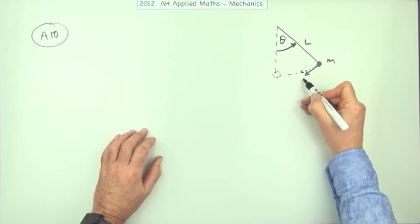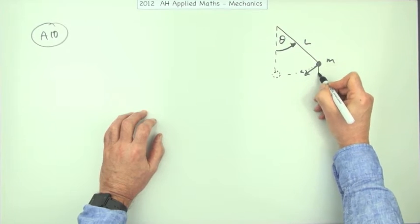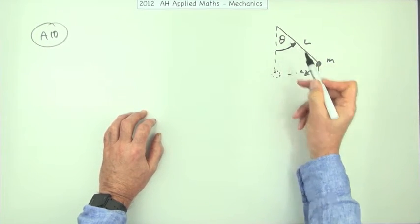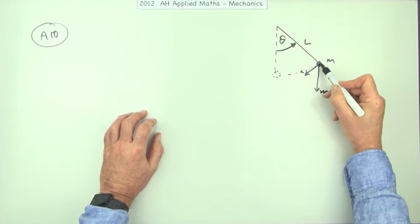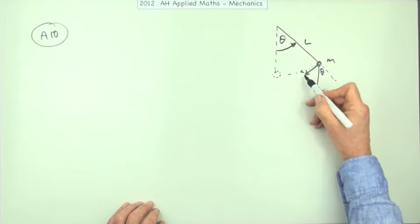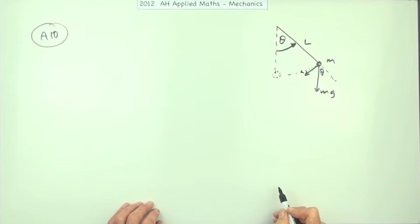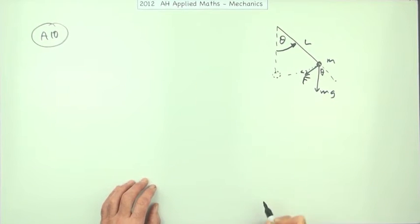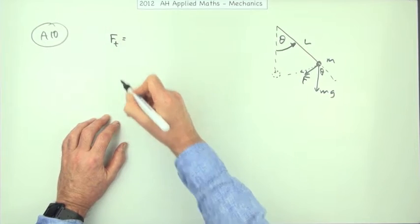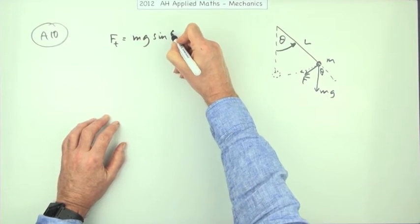Well, there is a force acting down the way, it's an unbalanced force. If that's the mass m, so that's mg, and if that's theta, then using corresponding angles, that part there's also theta, which means this component here, the tangential component, is going to be the sine of it. So there's this force down the way here, and that tangential force is going to be mg sine theta.